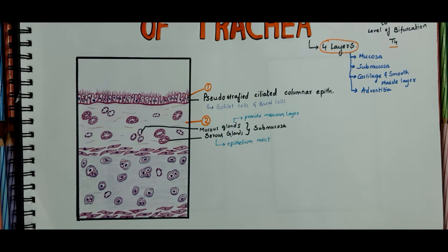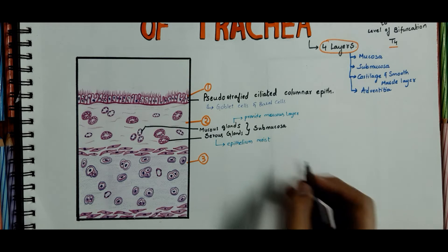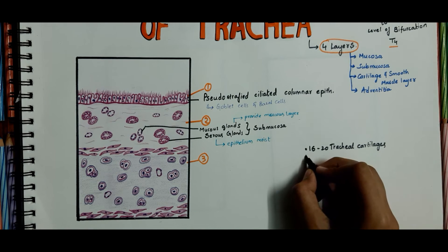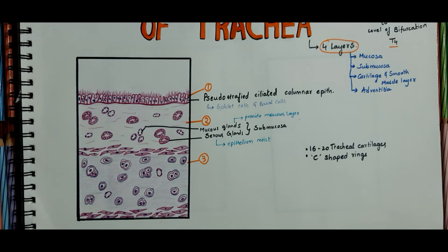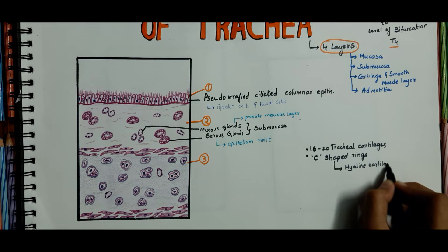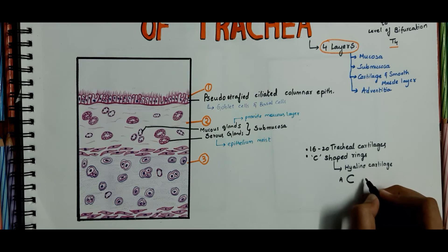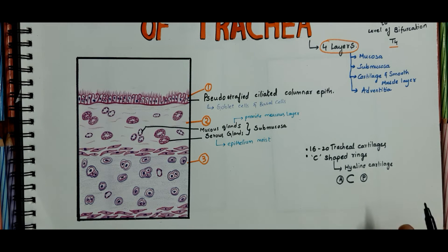Now coming to the third layer — the cartilage and smooth muscle layer. The skeletal basis of the trachea is made up of 16 to 20 tracheal rings or cartilages. These are C-shaped rings made up of hyaline cartilage. The open end of the C is directed posteriorly — this is the anterior part and this is the posterior open end.